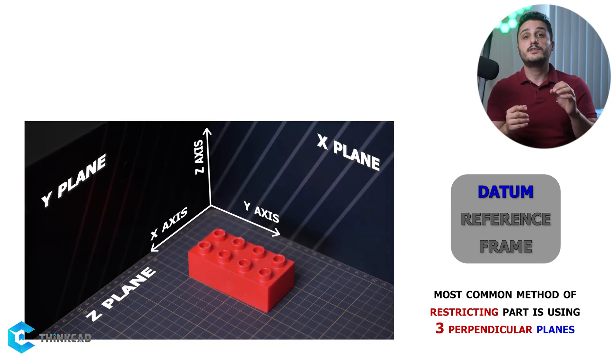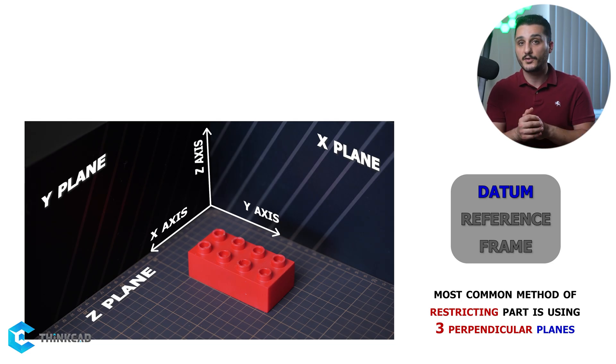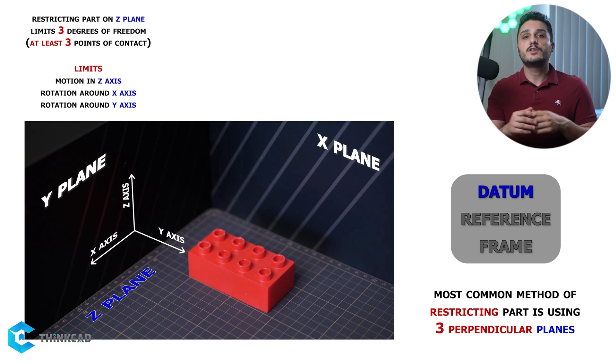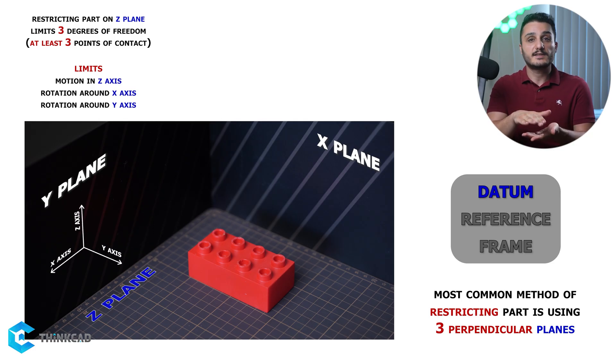Your first plane will restrict three degrees of freedom by having contact with at least three points on your imperfect surface. If you are using the z-plane as your datum, you are limiting motion in z-axis and also rotation around x and y-axis.